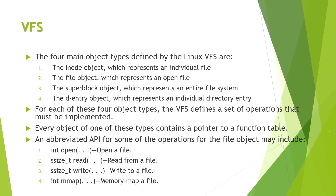There are four main object types defined by the Linux VFS. It stores the inode object — a unique inode number is given to each file. It stores the file object, which represents an open file. It also has the superblock object, which represents an entire file system, and the dentry object, which represents an individual directory entry.